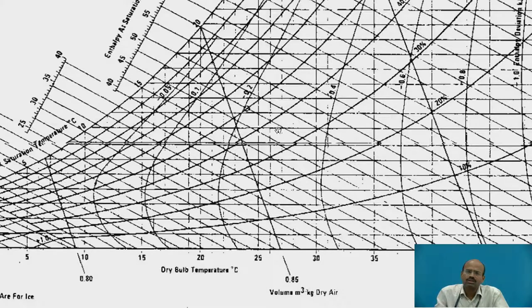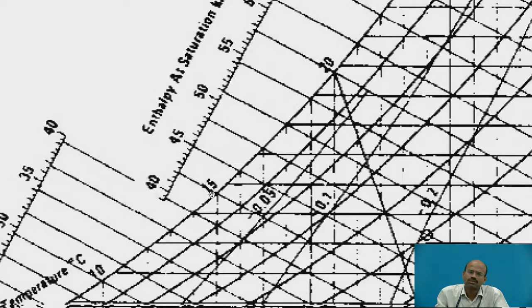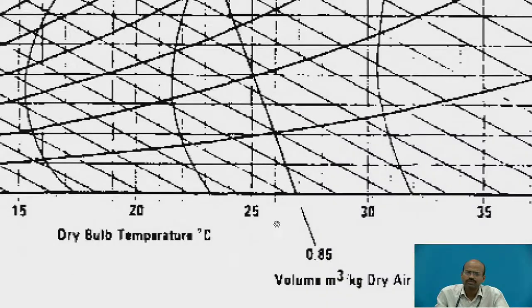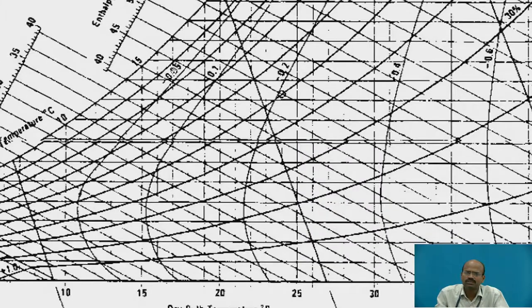Now, psychrometer will give you second property known as WBT, wet bulb temperature. On this outermost curve named as saturation curve, the WBT temperatures are located. This is 15 degrees Celsius, this is 20 degrees Celsius. These inclined lines passing from these temperatures are known as constant WBT lines. Easily we can obtain DBT and WBT temperatures of surrounding air. Then, taking the example of DBT as 25 degrees Celsius and 15 degrees of WBT, the intersection of these two temperatures is this point.